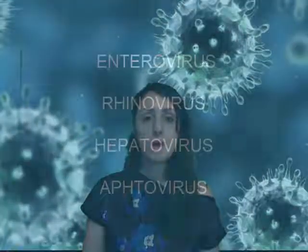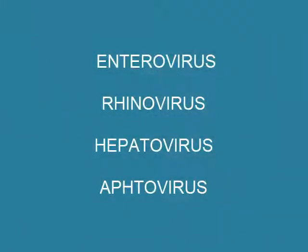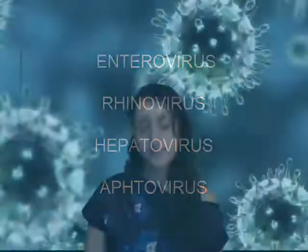There are four types of viruses belonging to this family. The first one is called enterovirus, which is made of about 112 serotypes. Then we have rhinovirus with 110 serotypes. Then we have hepatovirus, where we find hepatitis A virus, and finally there is aphthovirus type.